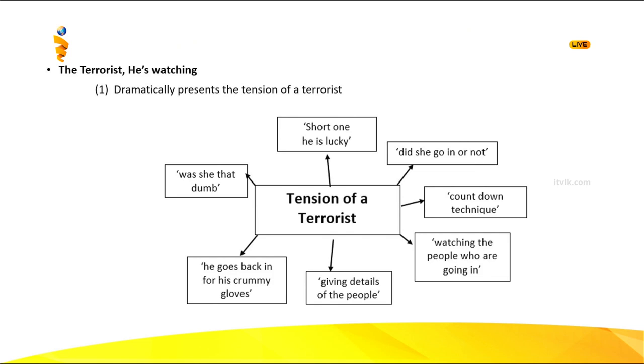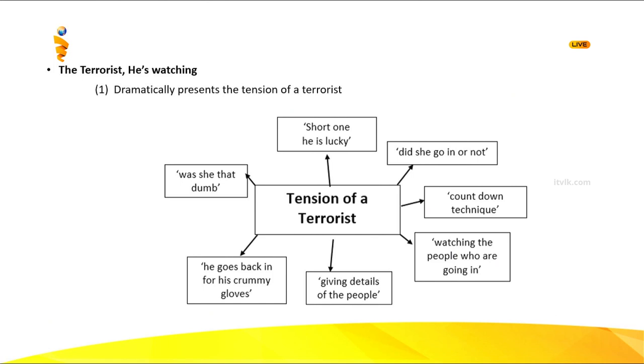The next poem is 'The Terrorist is Watching,' which dramatically presents the tension of a terrorist. There are two aspects when talking about this poem: most children find it difficult to determine whether the perspective is the terrorist's or the narrator's. I will take it as both. When answering, if you treat it as the terrorist's perspective, you need evidence. The terrorist says 'the short one, he is lucky' — he is counting and watching anxiously, wondering if she went into the building or not. There is a countdown technique used — he is counting and has a lot of tension.